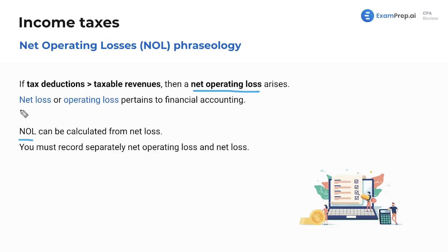Subtle but important difference. This is financial accounting. When we talk about net operating loss, this is what's going to be reported. How are we going to report that? How are we going to deal with that? That's what I'm here to display for you.